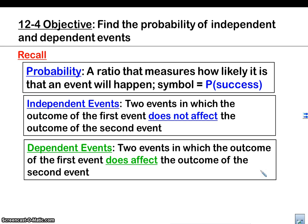We're really talking about two events, and actually we can do this for multiple events. The same rules apply. Just a reminder, probability is a ratio that measures how likely something is to happen. The symbol we use is P parentheses, the probability of something happening. Independent events are when one event doesn't affect the other event.